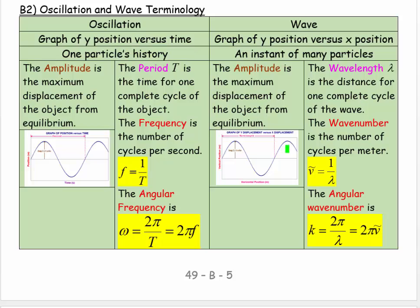This is a snapshot of the wave at one instant in time. On the left we have a graph of one particle's motion in time, and on the right we have a snapshot of all the particles at one instant in time. The problem is that the graphs look pretty much the same unless you pay attention. There's a lesson here about always looking at the axes to make sure you interpret graphs correctly.